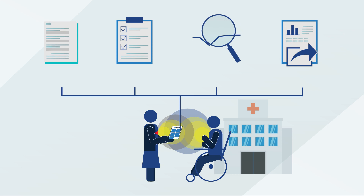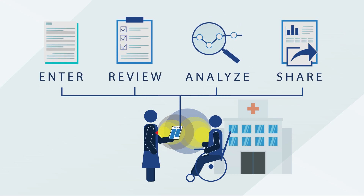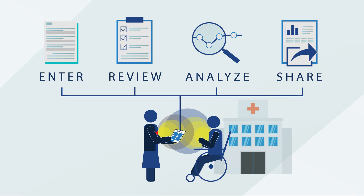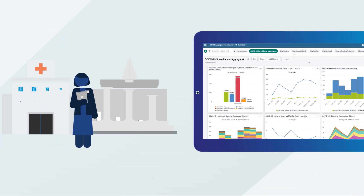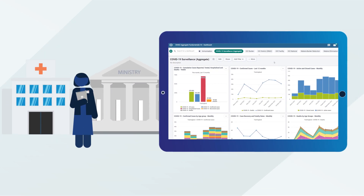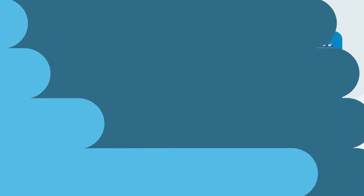Using DHIS2, health workers enter, review, analyze, and share the data they need to work effectively at the health facility and district levels, and national planners can then review this information to make decisions that improve patient and population health outcomes.